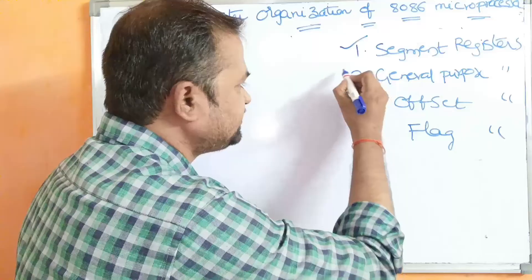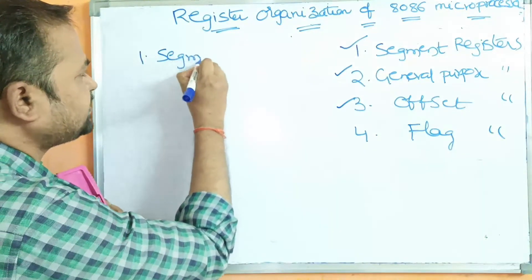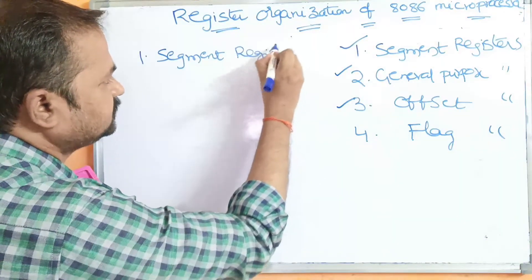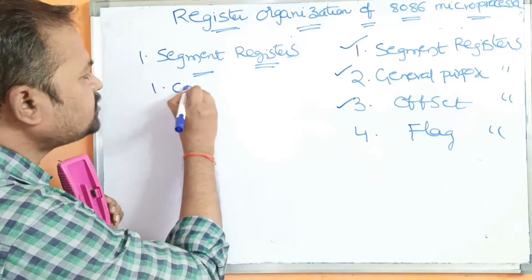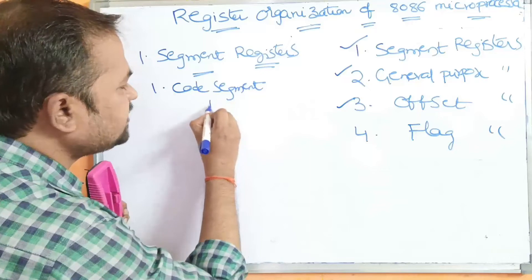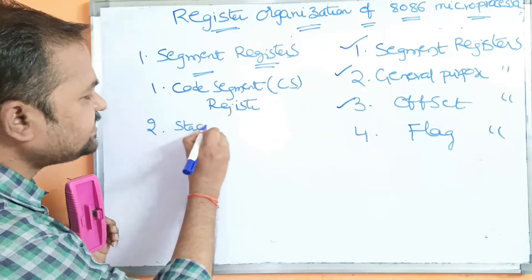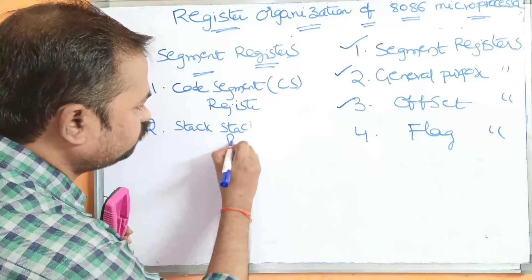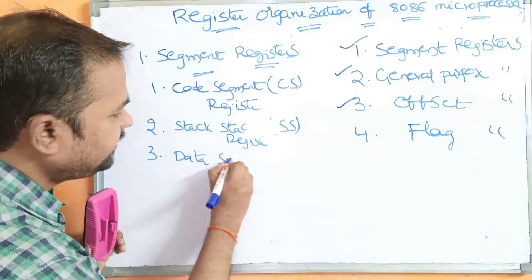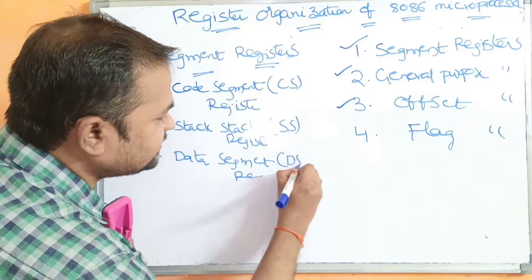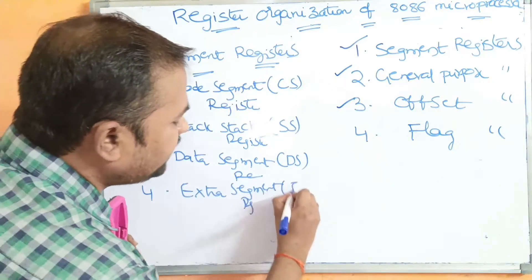In this video, we are going to discuss the first three register types. The first one is segment registers. We have four segment registers: the first is the Code Segment register (CS), the second is the Stack Segment register (SS), the third is the Data Segment register (DS), and the fourth is the Extra Segment register (ES).